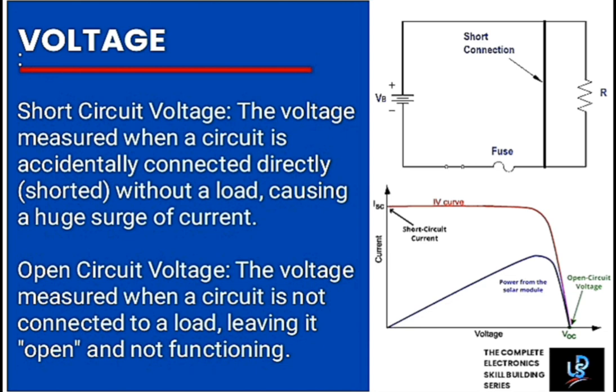Up next, short circuit voltage and open circuit voltage. Short circuit voltage is the voltage measured when a device is accidentally connected directly without a load, causing a huge surge of current, while open circuit voltage is the voltage measured when a circuit is not connected to a load, leaving it open and not functioning. Note that it is open because it is not connected, and it is closed because it is connected. It is shorted because it is directly connected without a load.